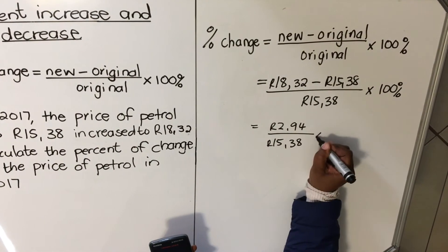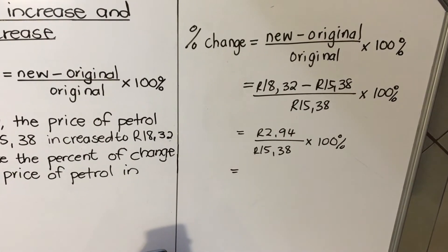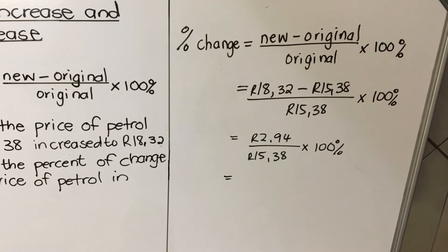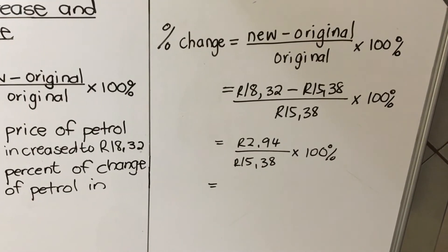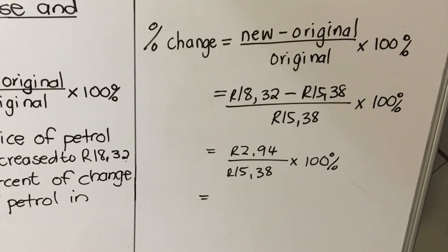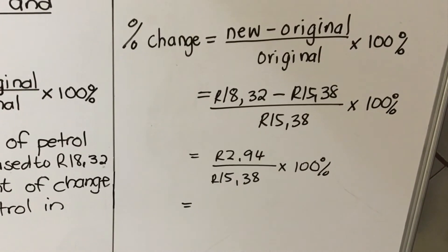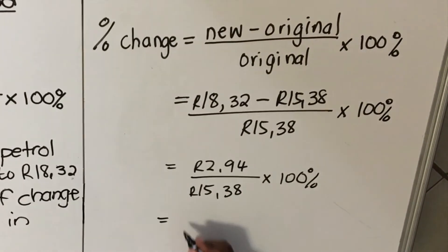Times 100 percent. Then if you're using a neutral display you can just go fraction, then 2.94 down, 15.38, and then multiply it by 100.